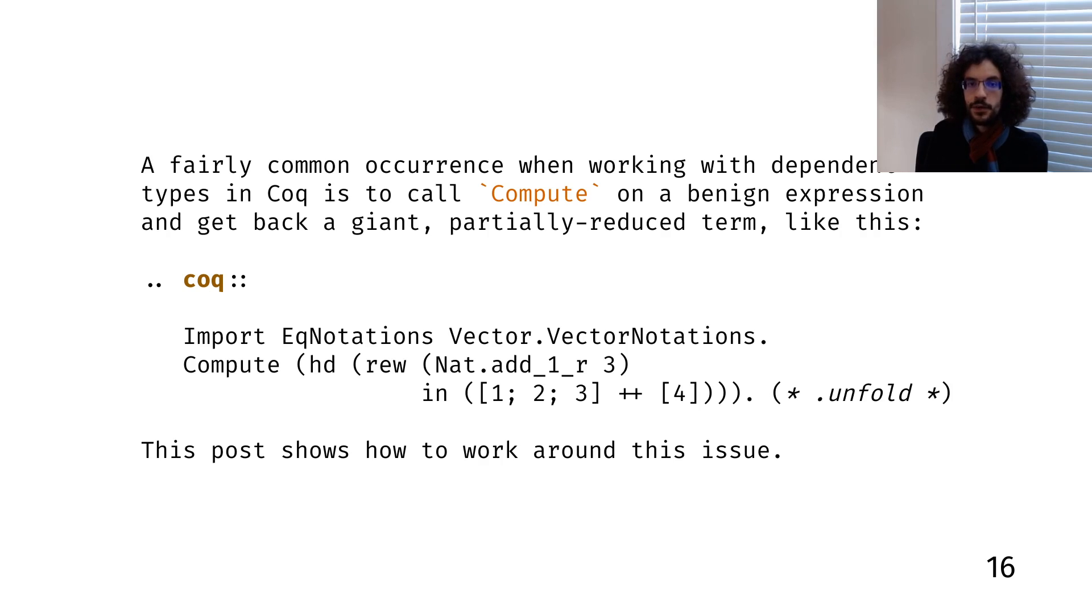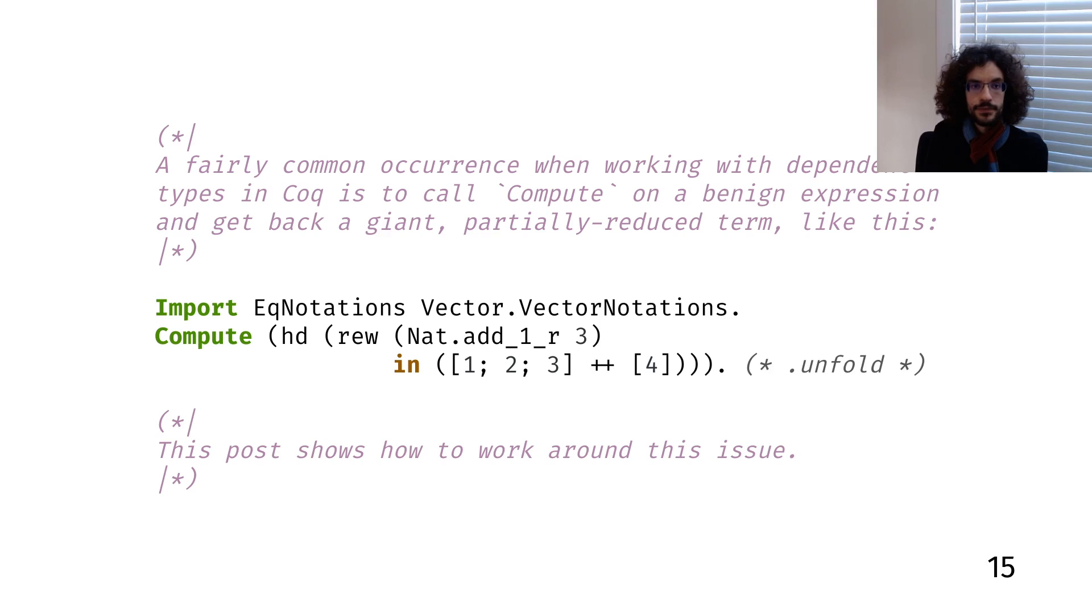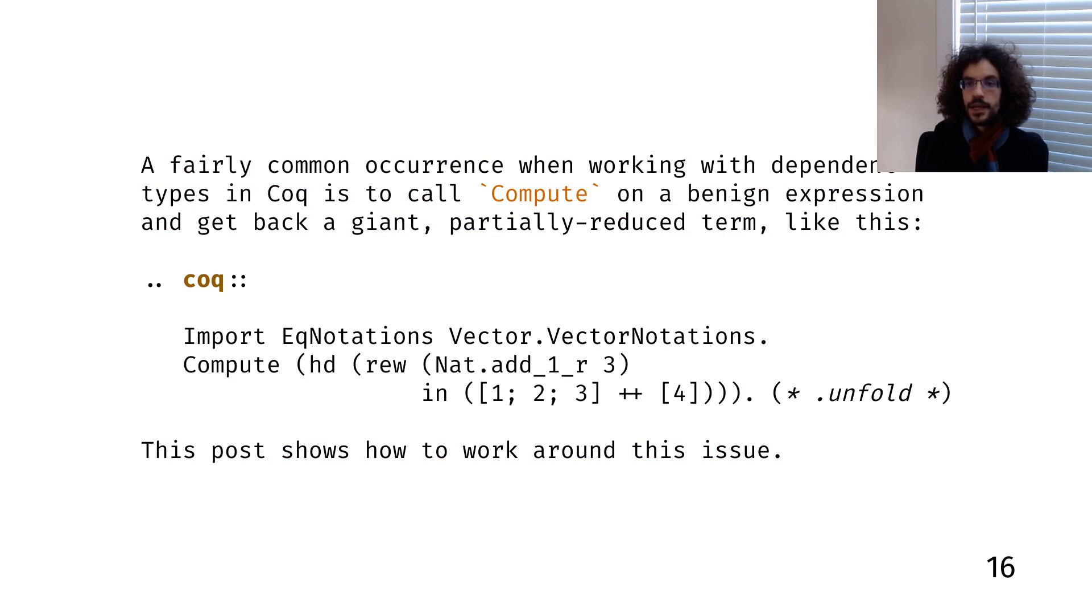The best part is that you can go back and forth like this. Once you're done editing the prose of your document and you're ready to resume hacking on the proofs, you can use Alectryon to convert the reStructuredText file back into a Coq source file, in which the prose is wrapped in special comments and the code is at the top level.